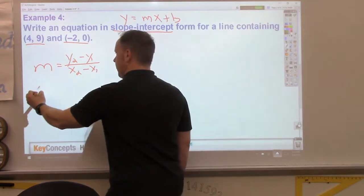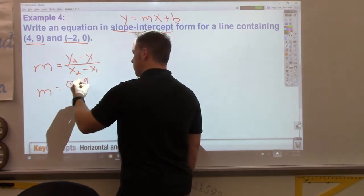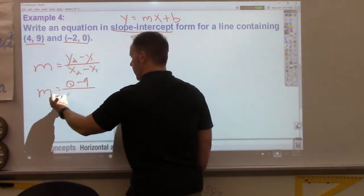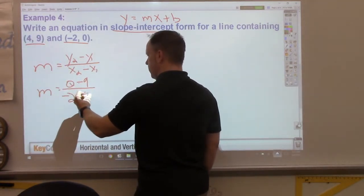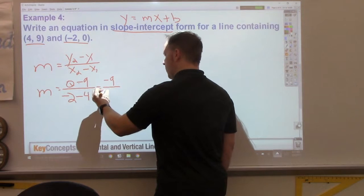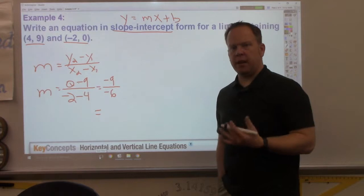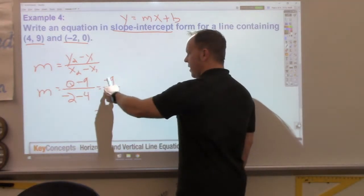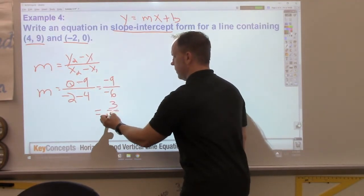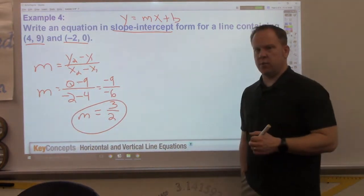Slope is y2 minus y1 over x2 minus x1. So, if I plug in my values, 0 minus 9 over negative 2 minus 4. I end up with negative 9 over negative 6. Simplify that and make it easier for you to use. Negative divided by negative is a positive. 9 over 6 reduces to... So, my slope is 3 over 2.